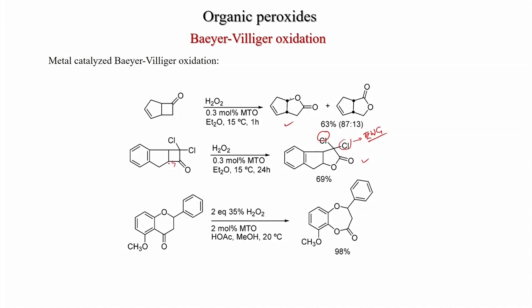A chromone compound with a carbonyl group, under MTO/H₂O₂ conditions, selectively gives the product where the aryl group migrates — aryl group migration is preferred over CH₂ migration.